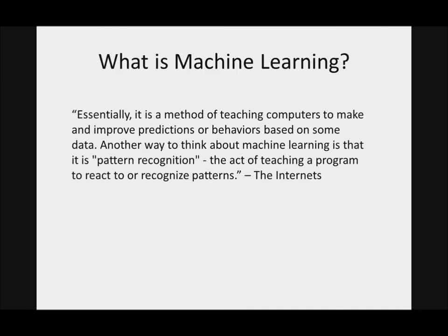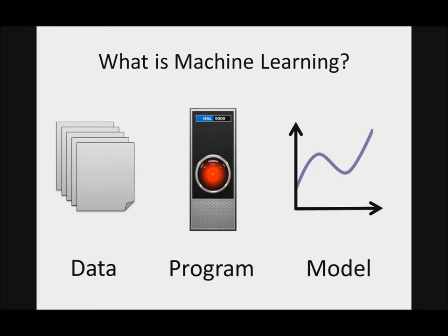What is machine learning? Essentially, it is a method of teaching computers to make and improve predictions or behaviors based on some data. Another way to think about machine learning is that it is pattern recognition, the act of teaching a program to react to or recognize patterns. This is a visual explanation of what machine learning is. You have a bunch of data and there's this program. You take that data, you dump it on that program, and then that program will generate a model.